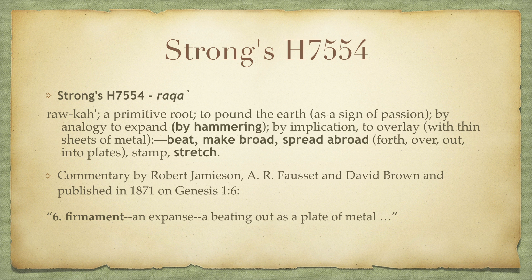The root word 'rakar' from Strong's means something pounded out — by hammering — or to overlay with thin sheets of metal, to beat, to make broad, to spread abroad, to spread into plates. From the Bible commentary of Jamieson, Fausset, and Brown: 'the firmament — an expanse, the beating out as a plate of metal.' The meaning of this word and how it's used in Genesis gives the idea of something God spread out and made solid, firm enough to support the heavy waters above.